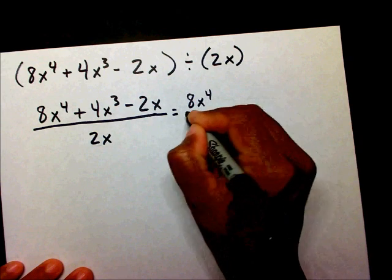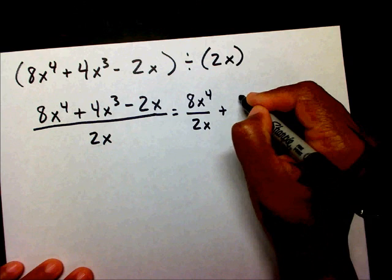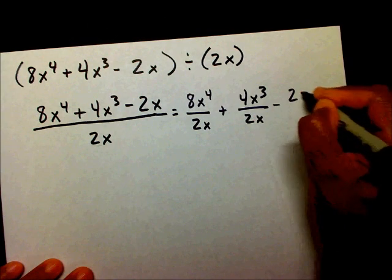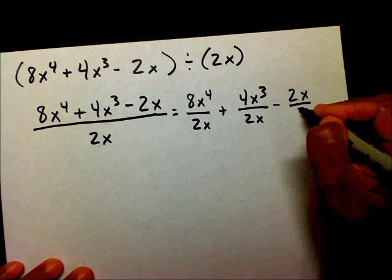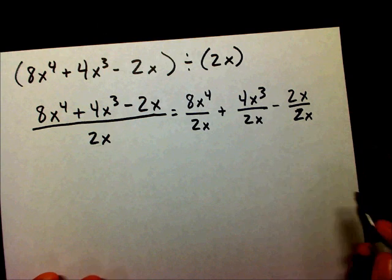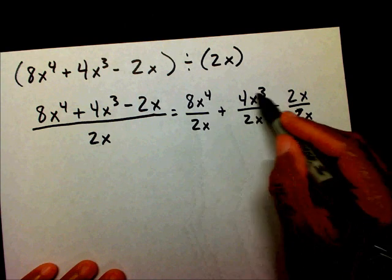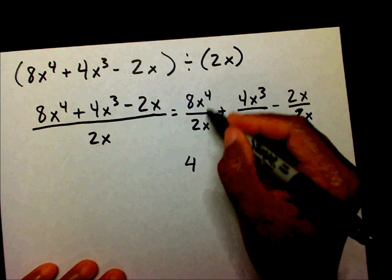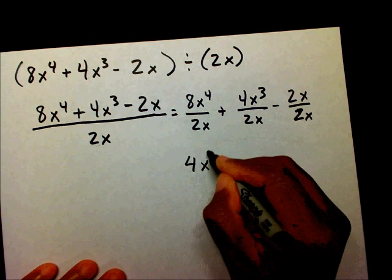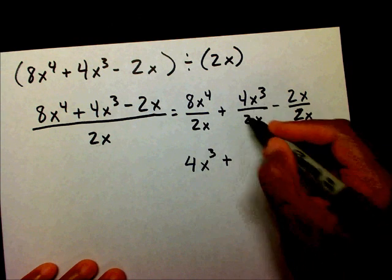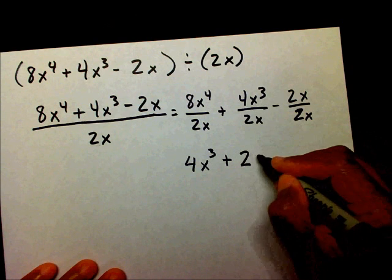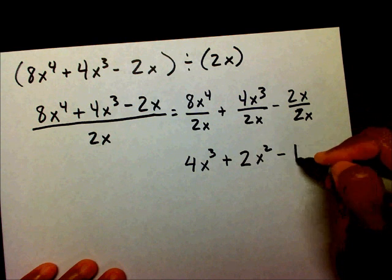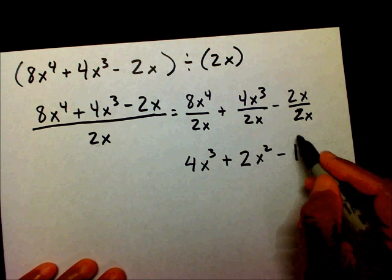So now I can divide every term in my numerator by 2x: 8x to the 4th divided by 2x, plus 4x to the 3rd divided by 2x, minus 2x divided by 2x. Now I'm going to simplify each term. That's going to be 8 divided by 2 is 4, and x to the 4th divided by x is x to the 3rd. Plus 4 divided by 2 is 2, and x to the 3rd divided by x is x squared. And 2x divided by 2x gives you negative 1. And this is your final answer.